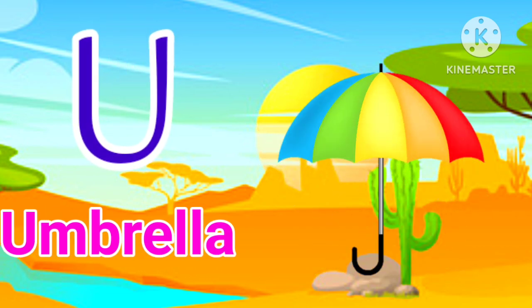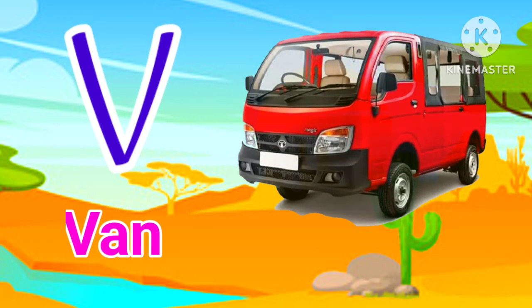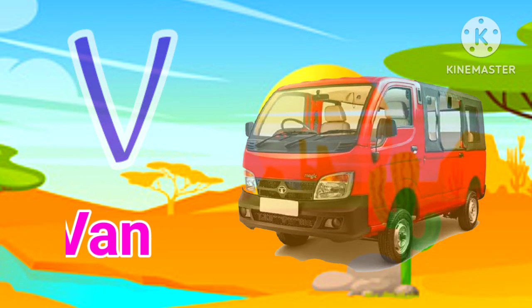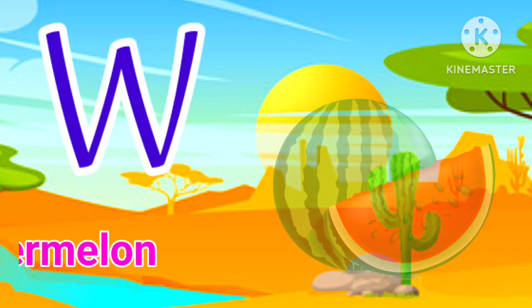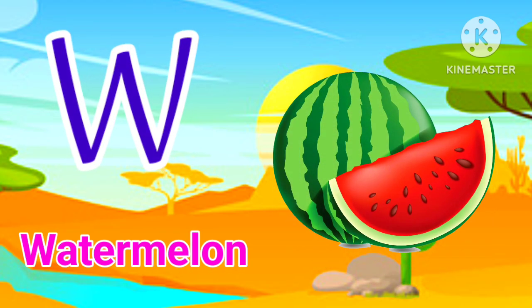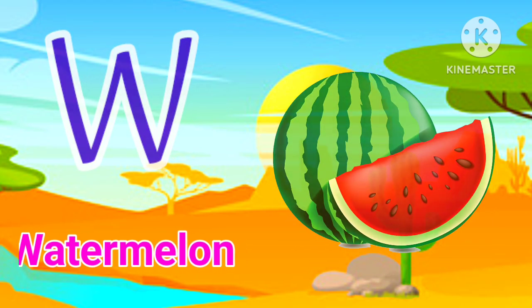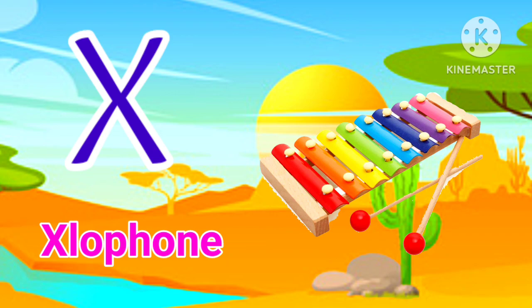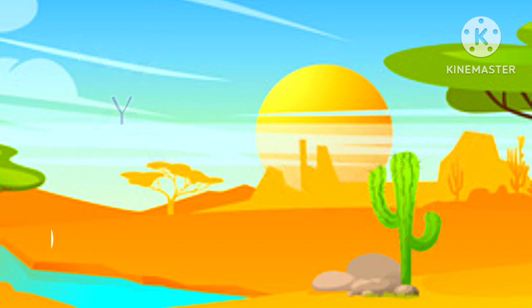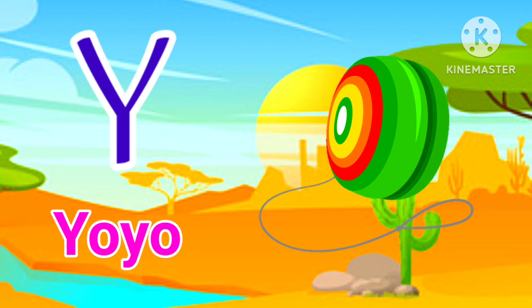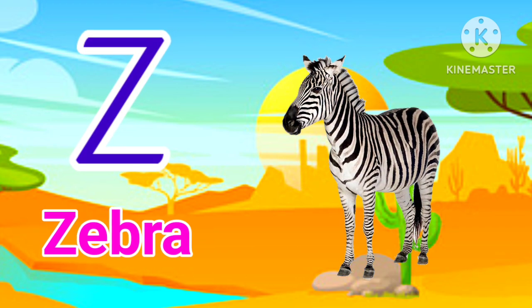U for Umbrella. V for Van. W for Watermelon. X for X-ray. Y for Yo-Yo. Z for Zebra.